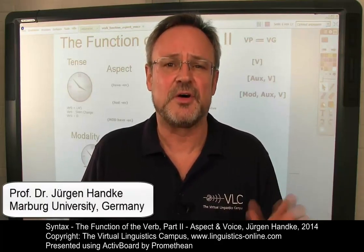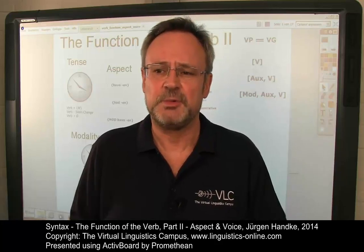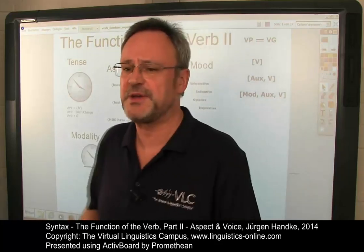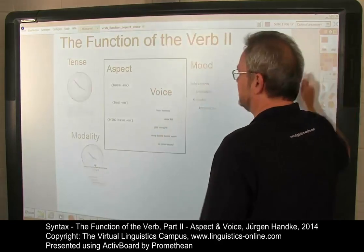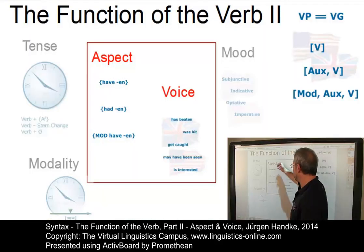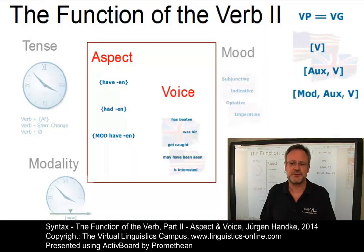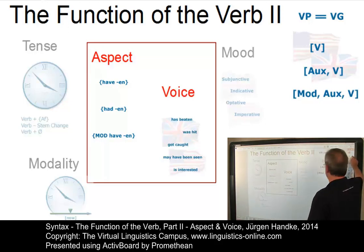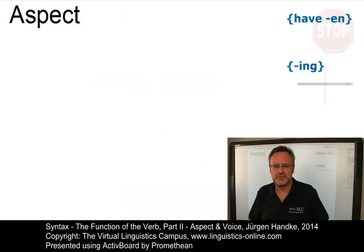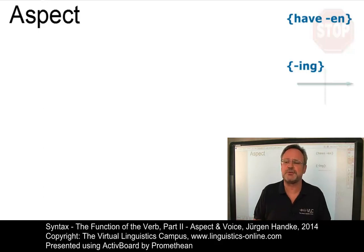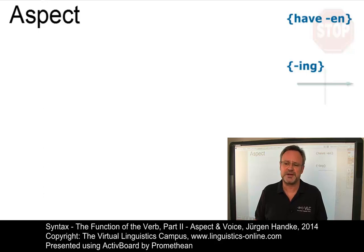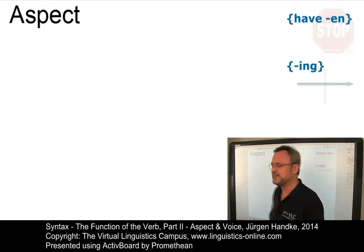Welcome back! Having discussed the notion of tense in the e-lecture The Function of the Verb Part 1, we will now focus on two further functional aspects in this follow-up e-lecture: aspect and voice. Let us start with aspect. The term aspect refers to a grammatical category which reflects the way in which the action denoted by the verb is regarded or experienced with respect to time.